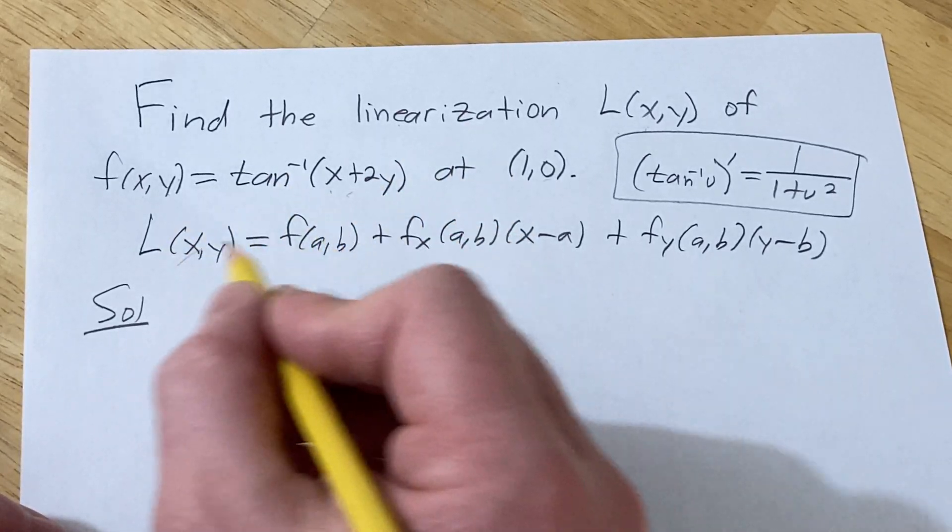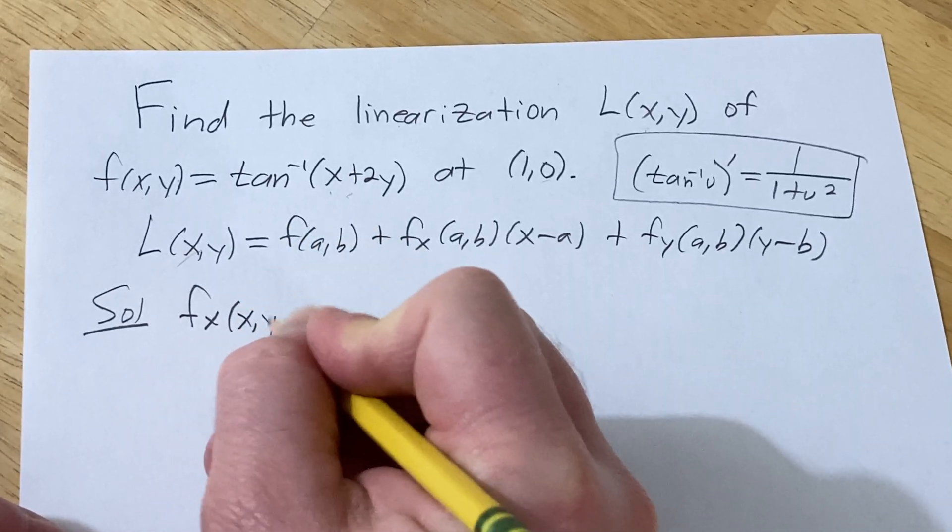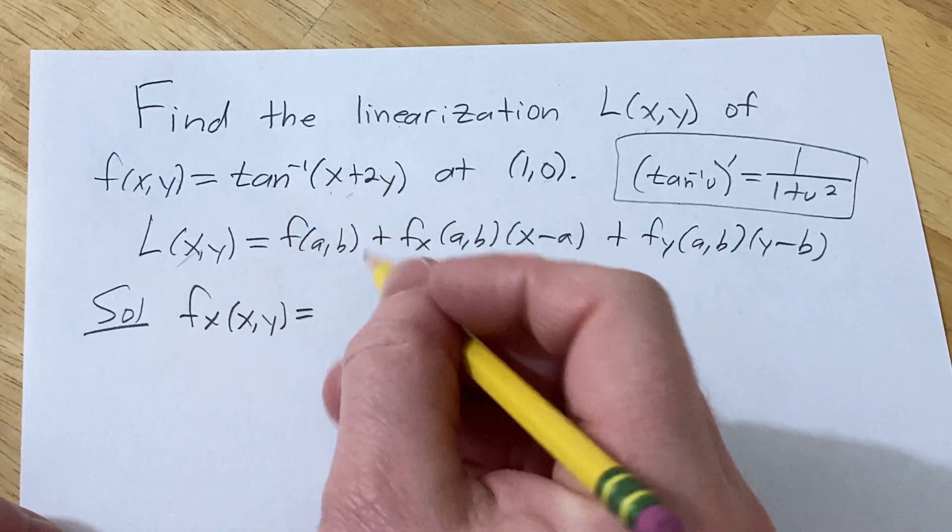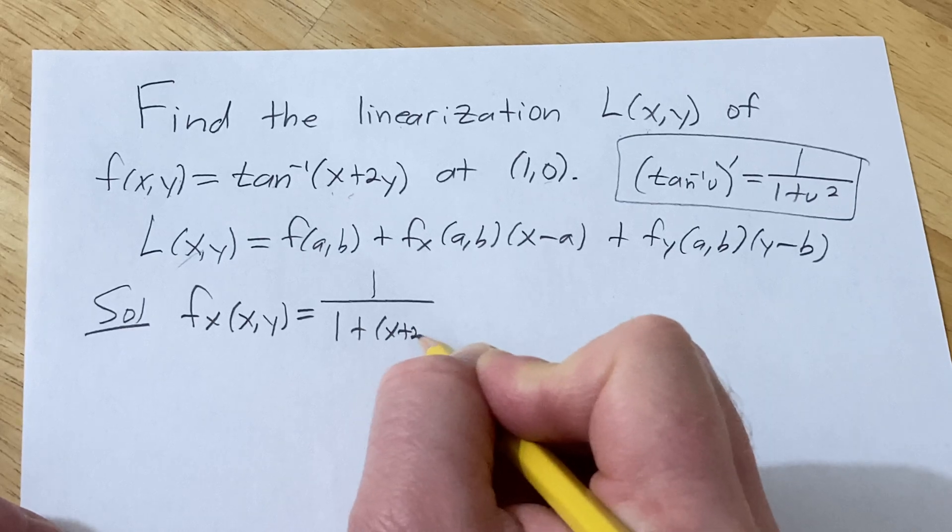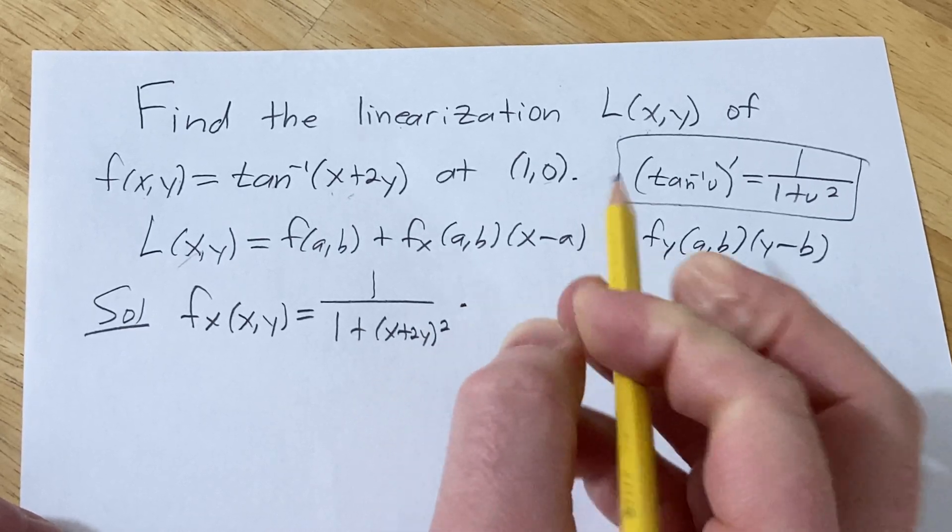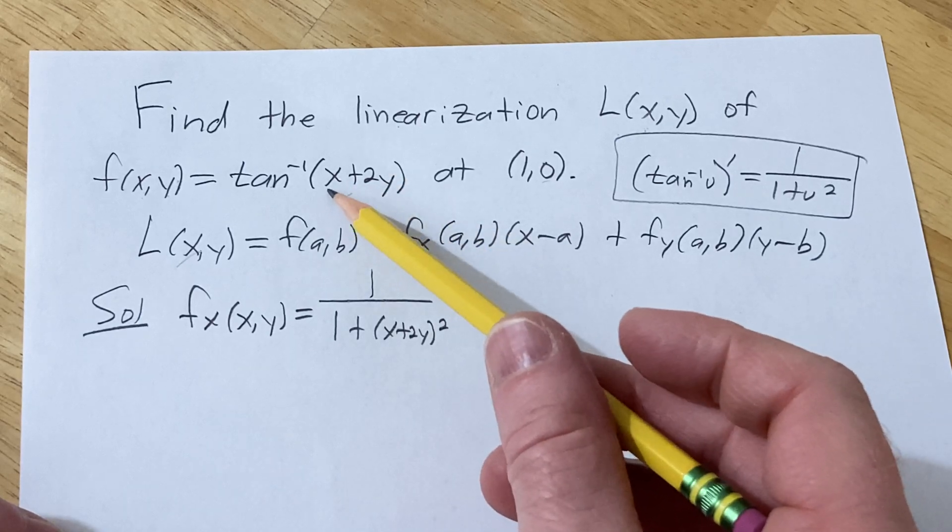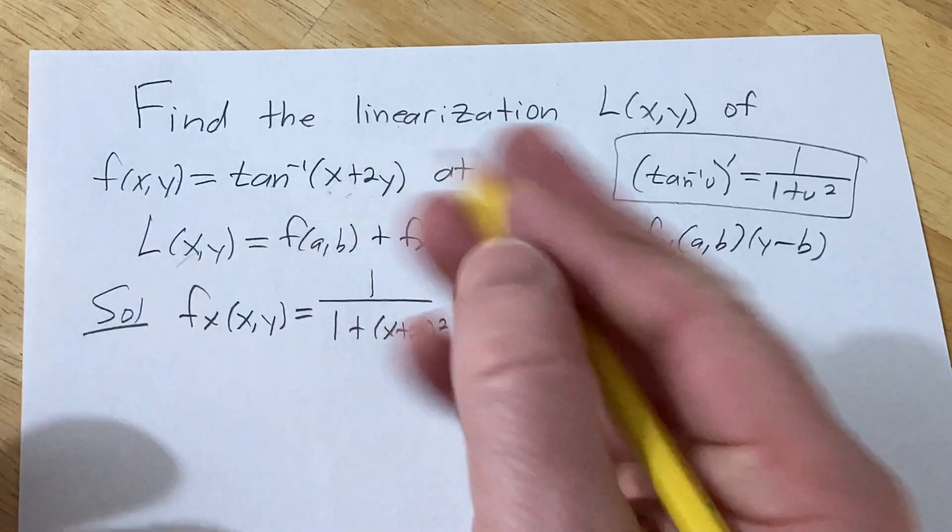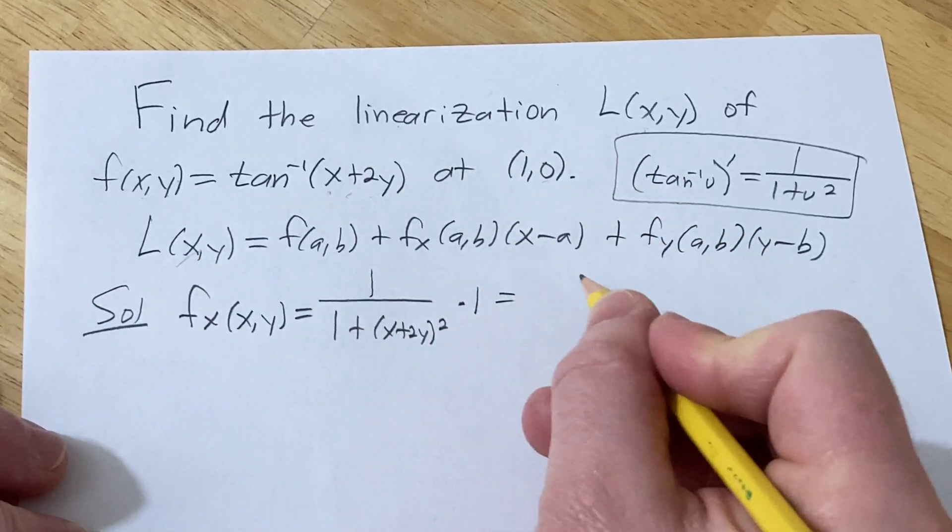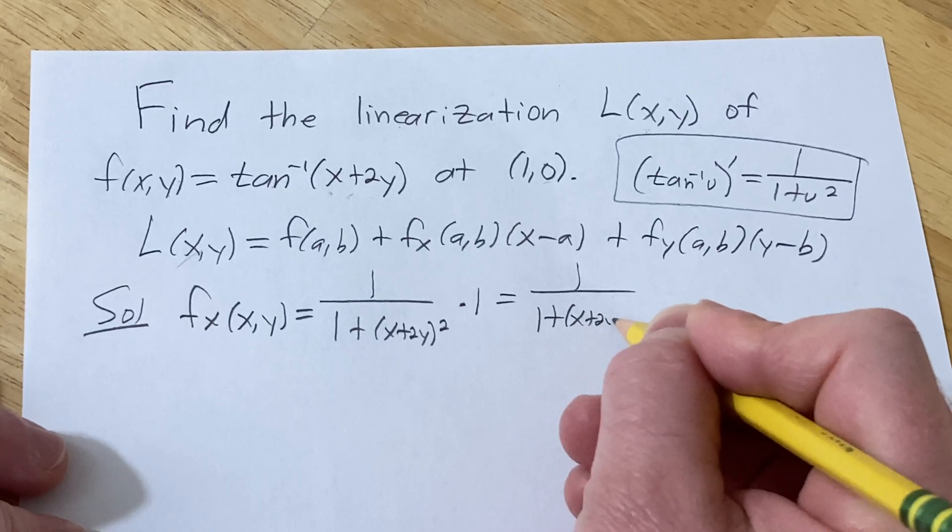All right, so let's find the partial with respect to x. So it's going to be 1 over 1 plus (x+2y) squared times the derivative of the inside function. So this is the partial with respect to x, so all of the y's are constants. So this derivative will be 0, the derivative of x is 1. So we simply have 1 over 1 plus (x+2y) squared.